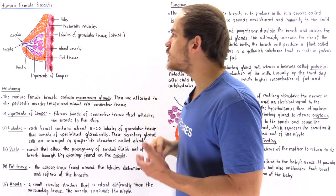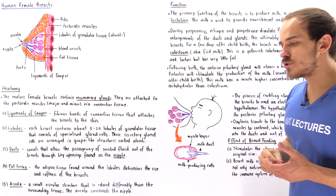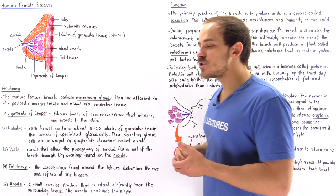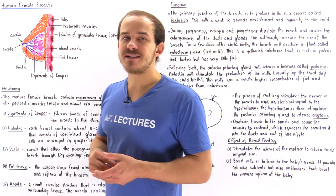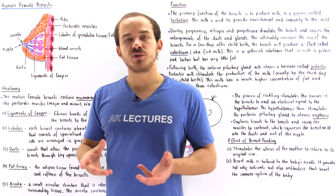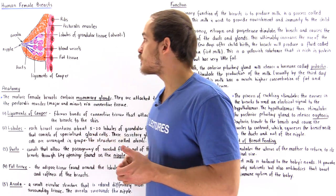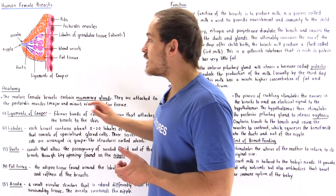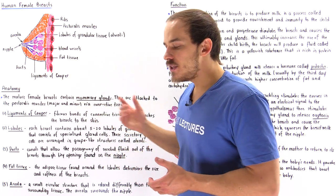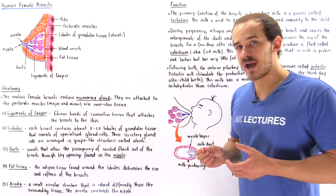The lobes of glandular tissue are these grape-like structures that consist of specialized secretory cells that produce and release milk. When the milk is produced and released, it is released into these milk ducts, and these ducts act as passageways.